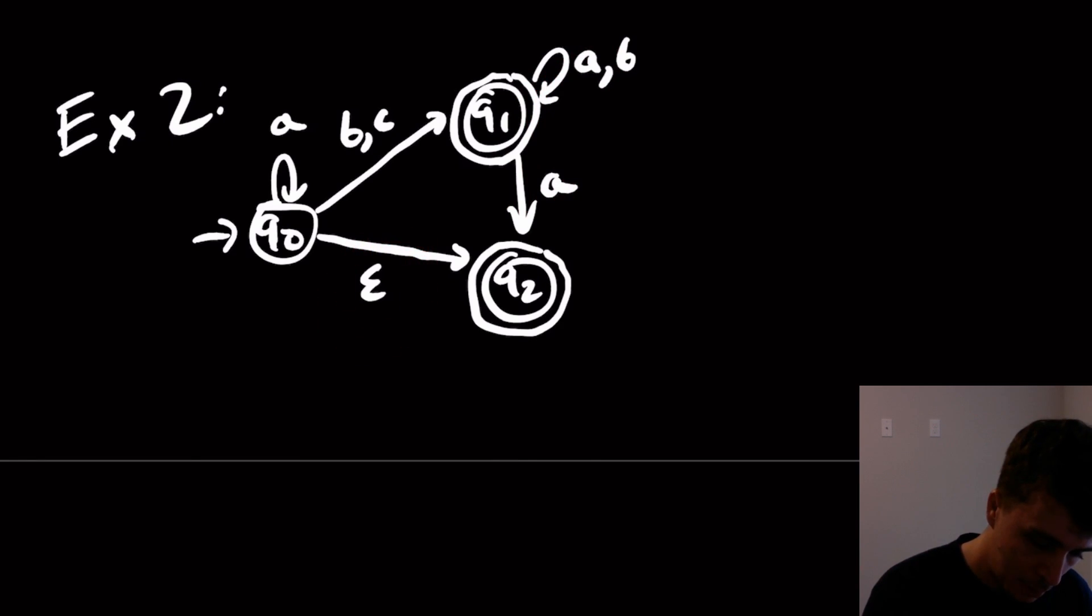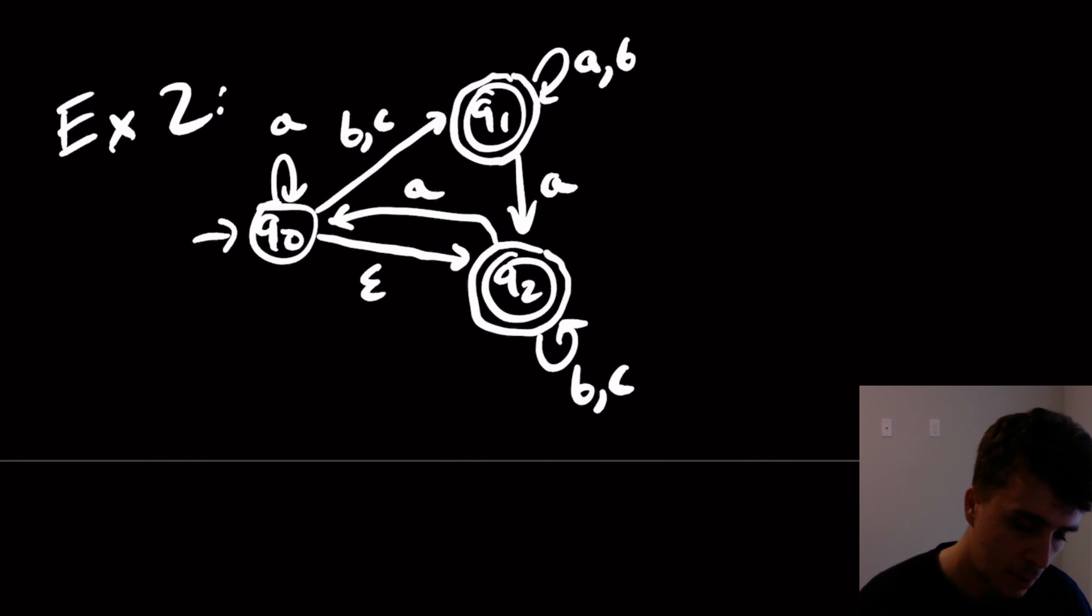So here, I'm going to have a self loop on B and C. Let's see. So then maybe we'll come back to here on A. Okay.